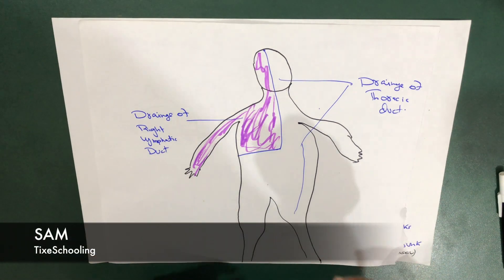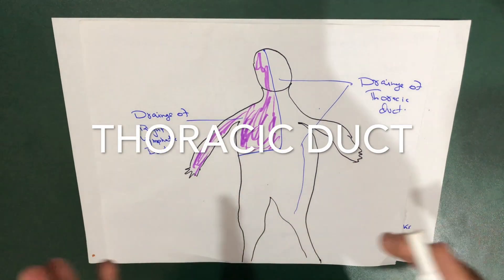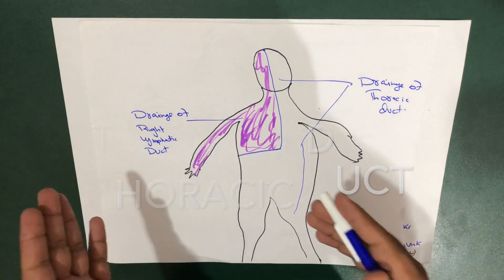Hello everybody, this is Sam from Tides is Cooling. Today we are going to talk about an important topic: the thoracic duct, which is also known as Van Hoorn's canal.